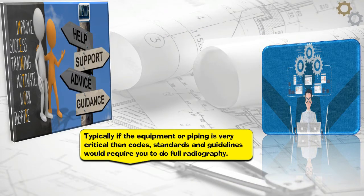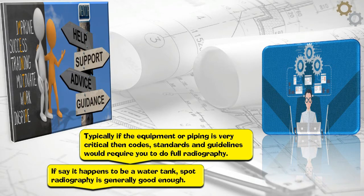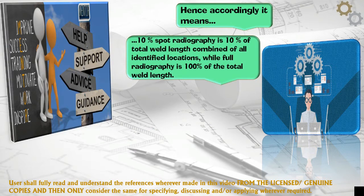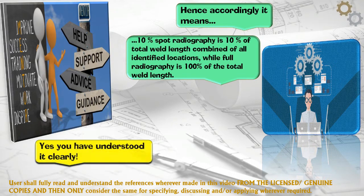Typically, if the equipment or piping is very critical, then codes, standards, and guidelines would require you to do full radiography. If it happens to be a water tank, spot radiography is generally good enough. Hence, 10% spot radiography means 10% of total weld length combined of all identified locations, while full radiography is 100% of the total weld length. You have understood it clearly.